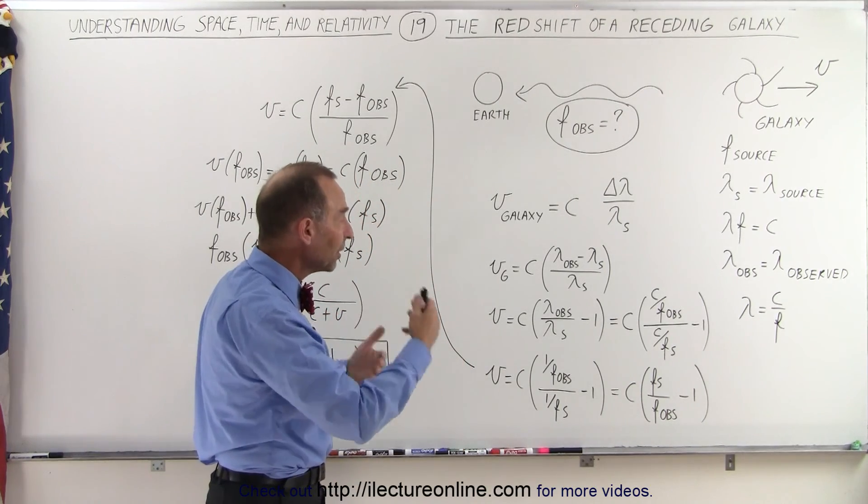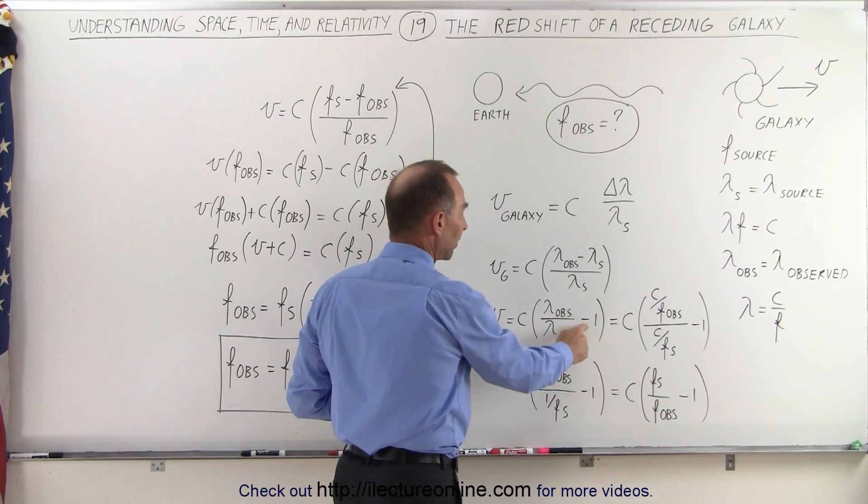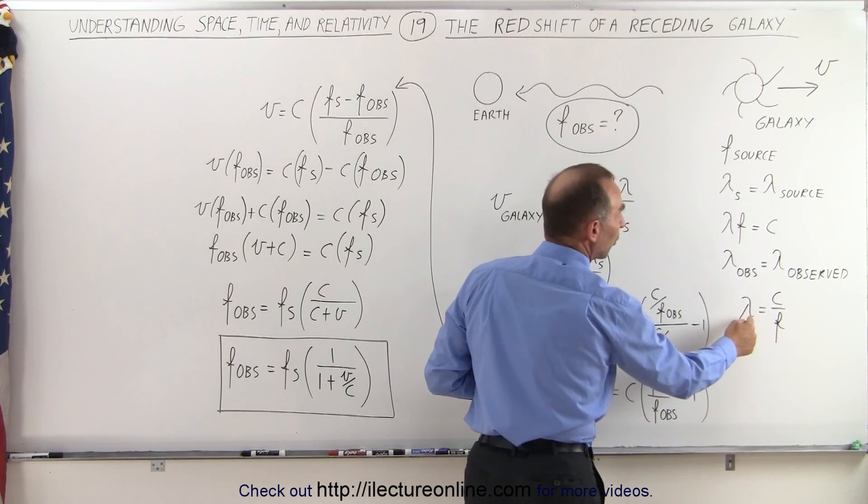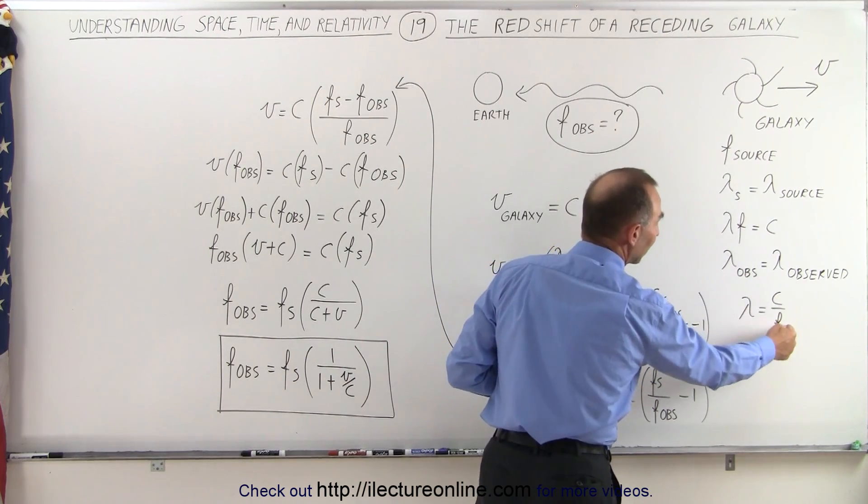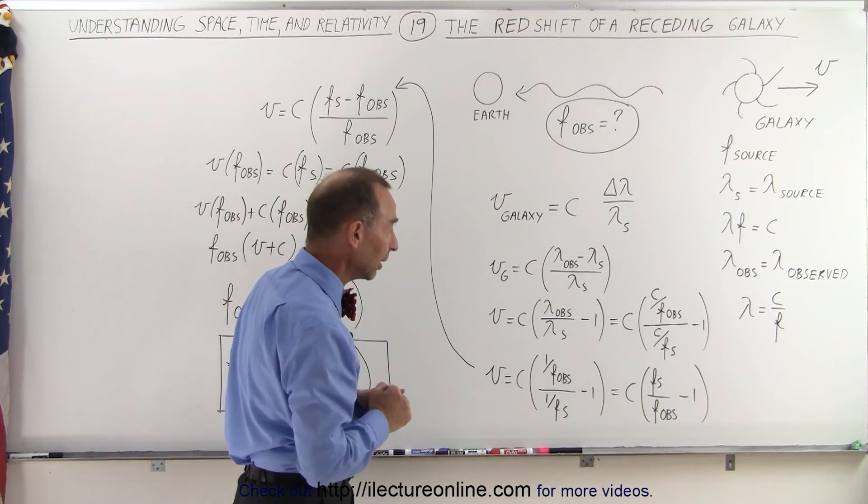Then, if we do our manipulation, we write it as the ratio of the observed wavelength over the source wavelength minus 1, and then we employ this relationship where the wavelength can be written as the speed of light divided by the frequency. After all, we're talking about light here, and so we have that relationship.